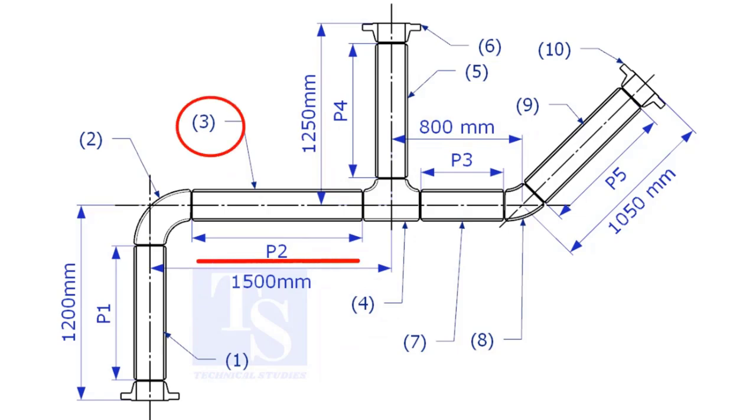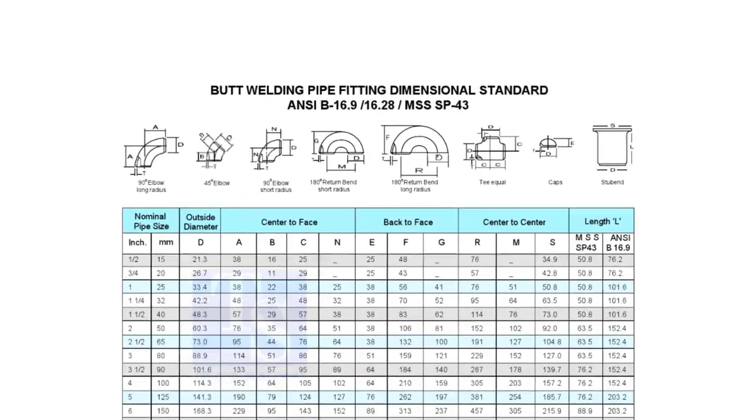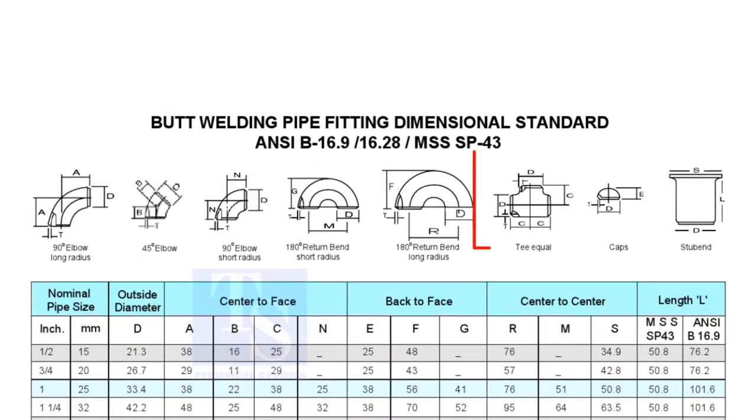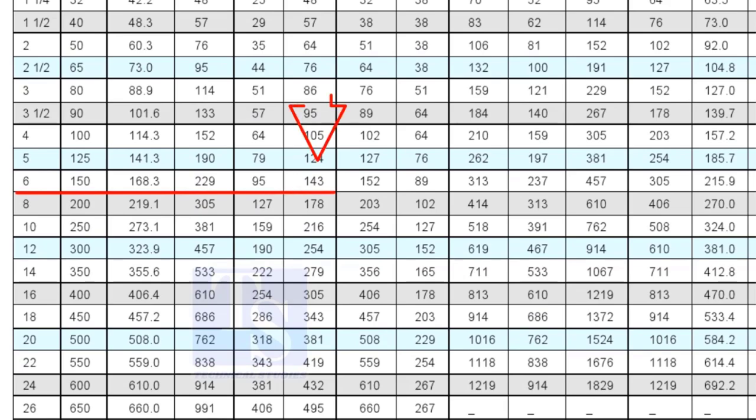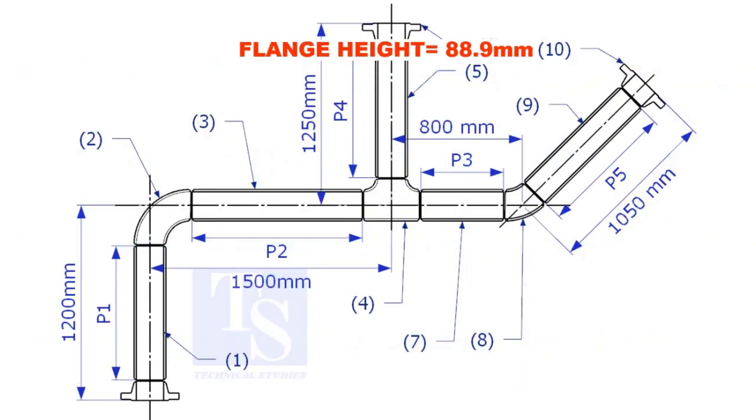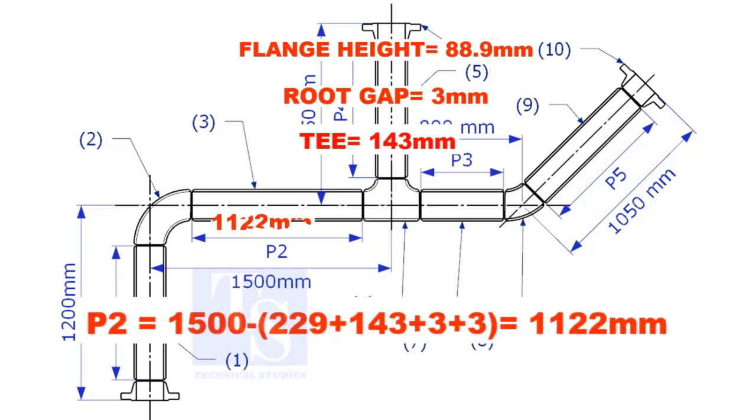Let us calculate the length of item number 3. We already know the takeoff length of the 6 inch long radius elbow. Now, check the chart for the takeoff length of the equal T. It is 143mm. The length of item number 3 is 1122mm.